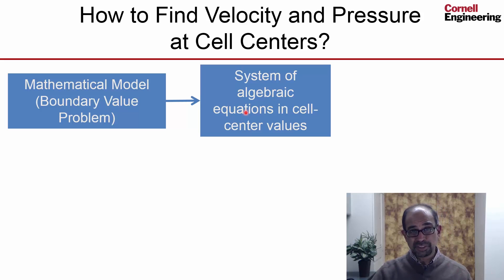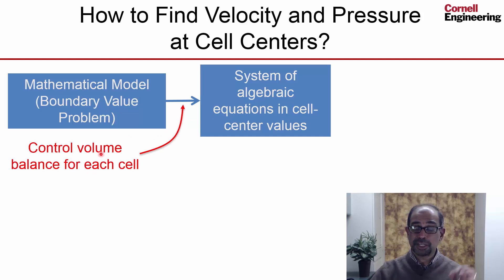In our particular example, we have 36 unknown values, so we would have to generate 36 algebraic equations. And these equations are generated by performing a control volume balance for each cell. So you do a control volume balance for mass and for momentum. And we will take a look at the details of that in a little bit.